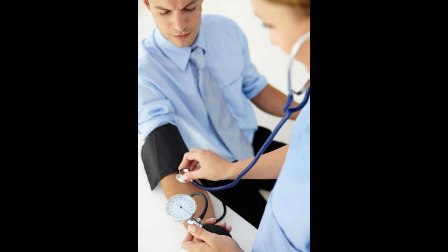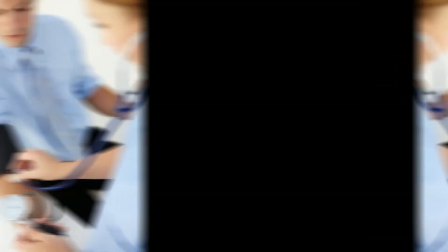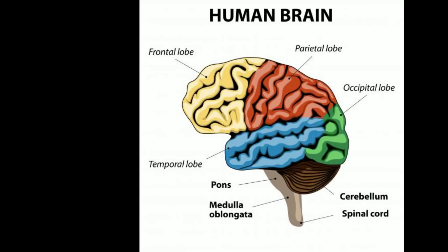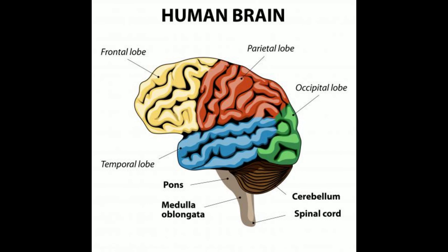Preventing damage to the small blood vessels in the brain is crucial when patients have several risk factors. This involves treating existing conditions that can potentially lead to vessel and white matter damage. Prevention also involves lifestyle changes like preventing coronary blockages, exercising regularly, and eating healthy.